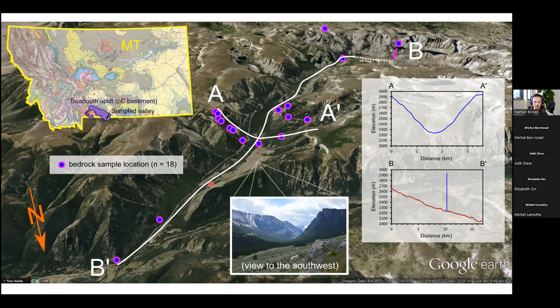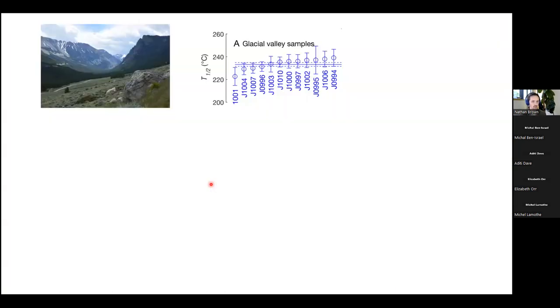So we originally had collected these samples for a different purpose. But after we made these stable drill core measurements, I was curious what would happen if we would measure the T half values from these glacial valley samples and compare them against the stable drill cores. So that's what we did. Here are the measured T half values for these glacial valley samples. These are taken all across the valley, high points, low points. So there's going to be some natural thermal variability today.